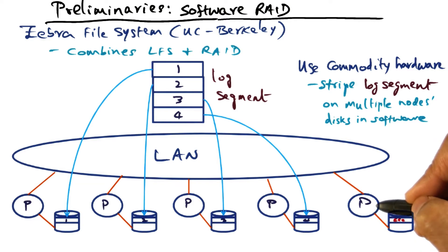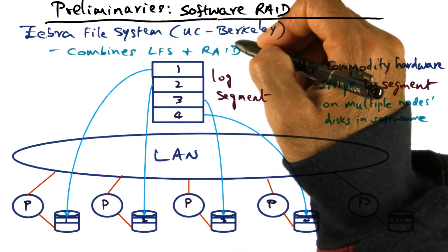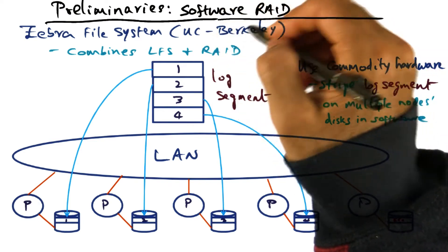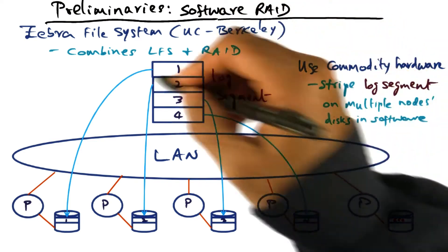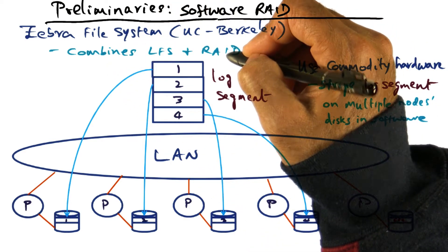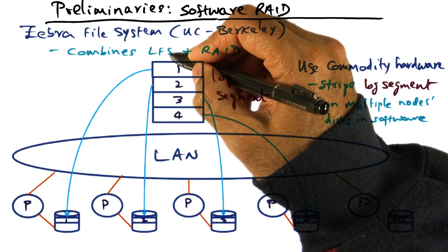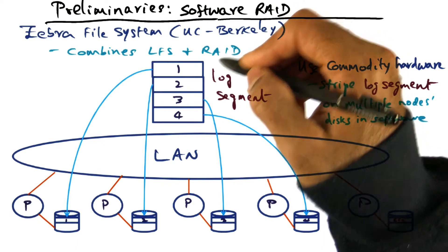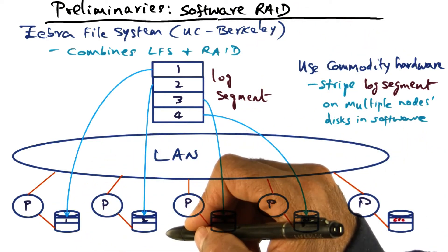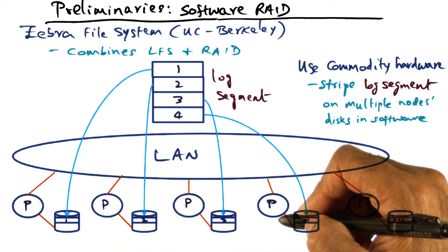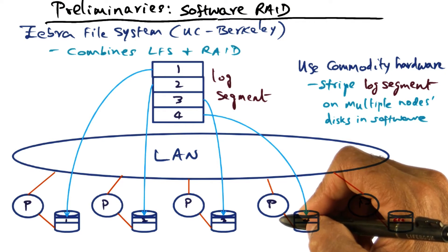That's the idea behind the Zebra file system, built at UC Berkeley, which was the first to experiment with this software RAID technology. It combines both log-structured file system and RAID technology — log-structured file system to get rid of the small write problem, and RAID technology to achieve the parallelism needed to read from disks in parallel and reduce latency for serving client requests.